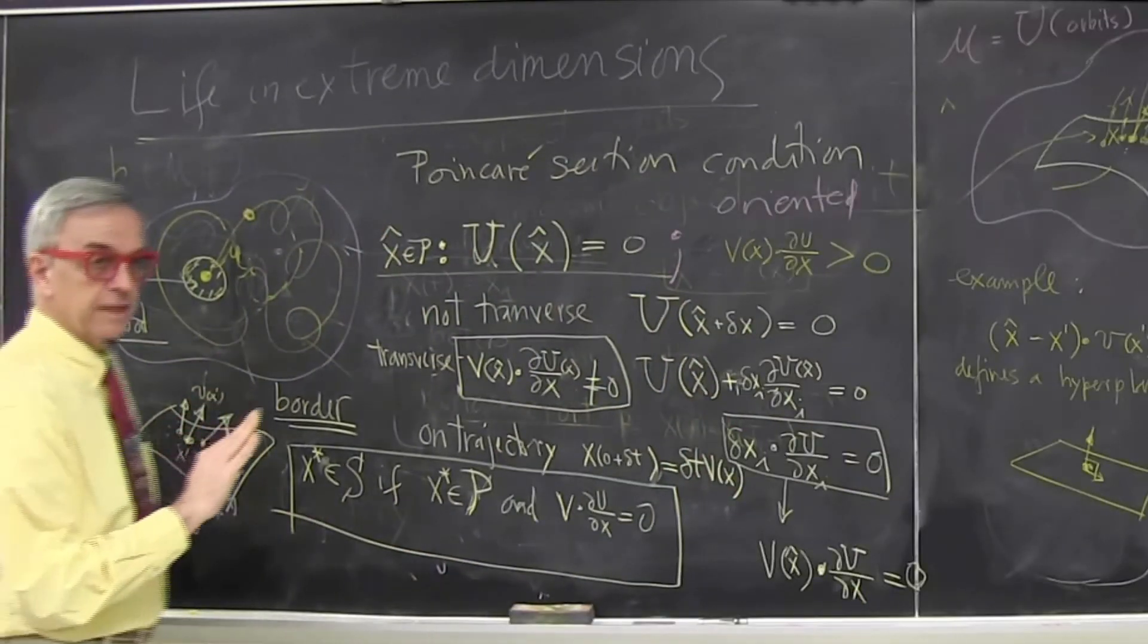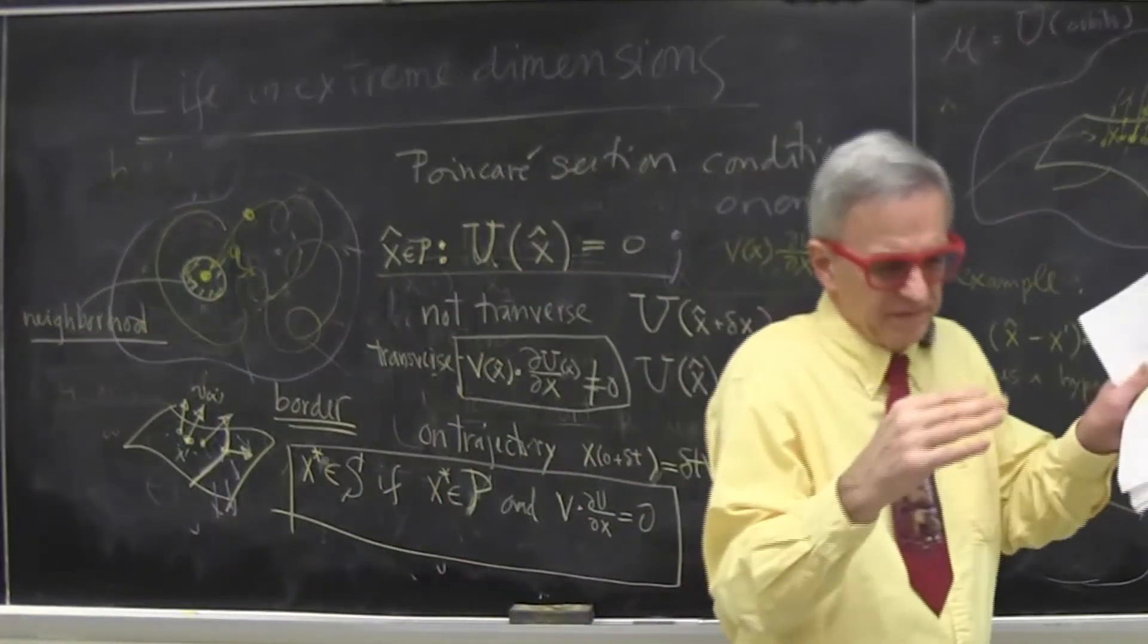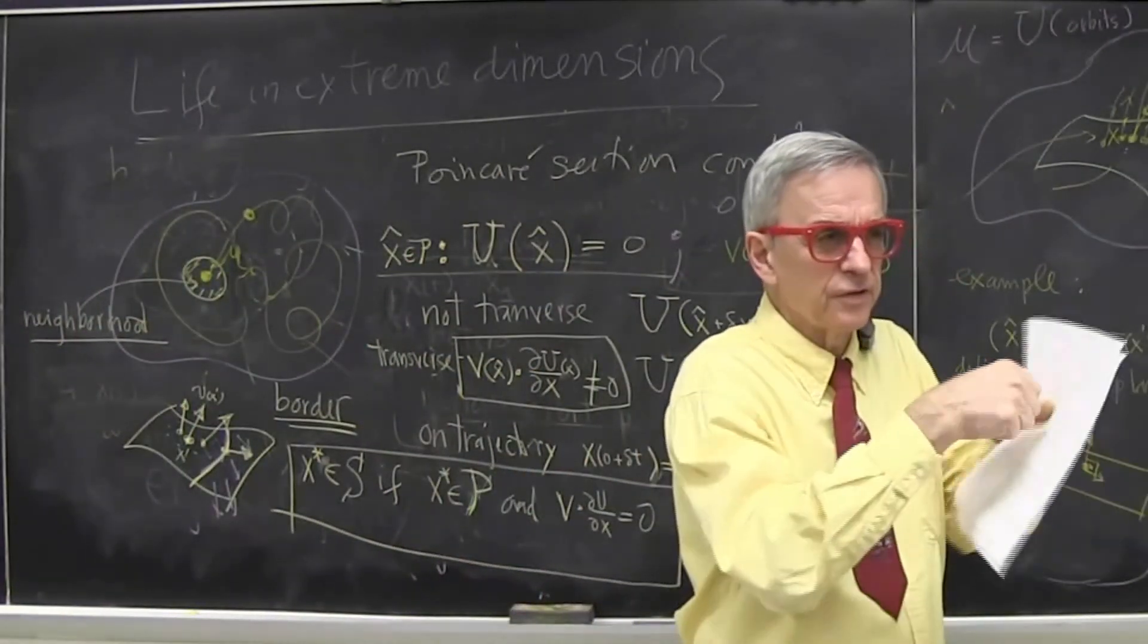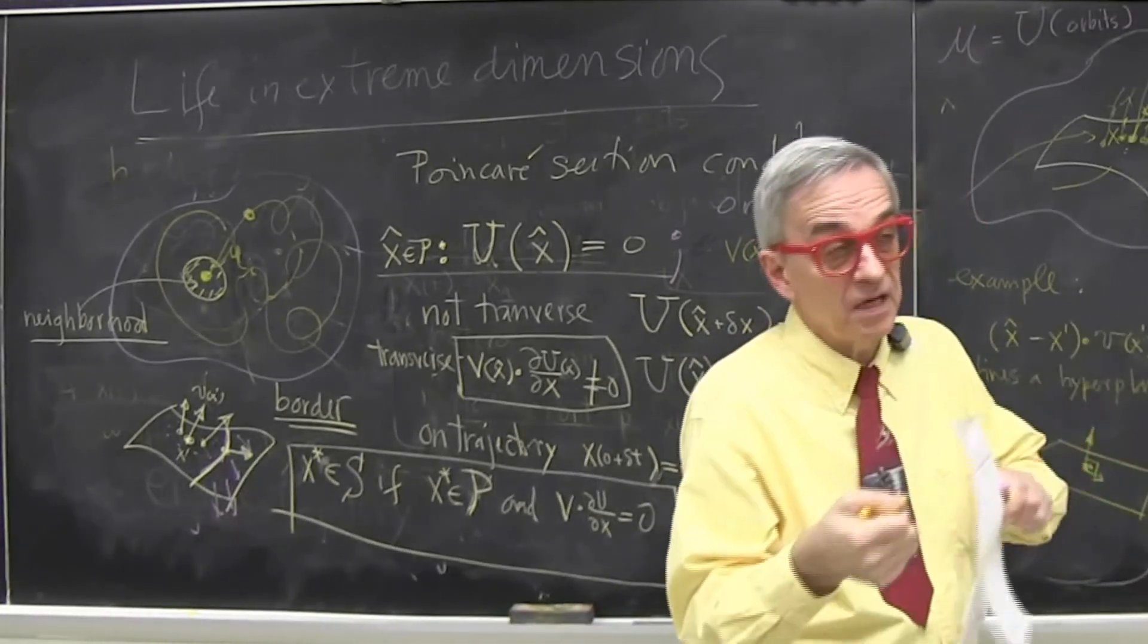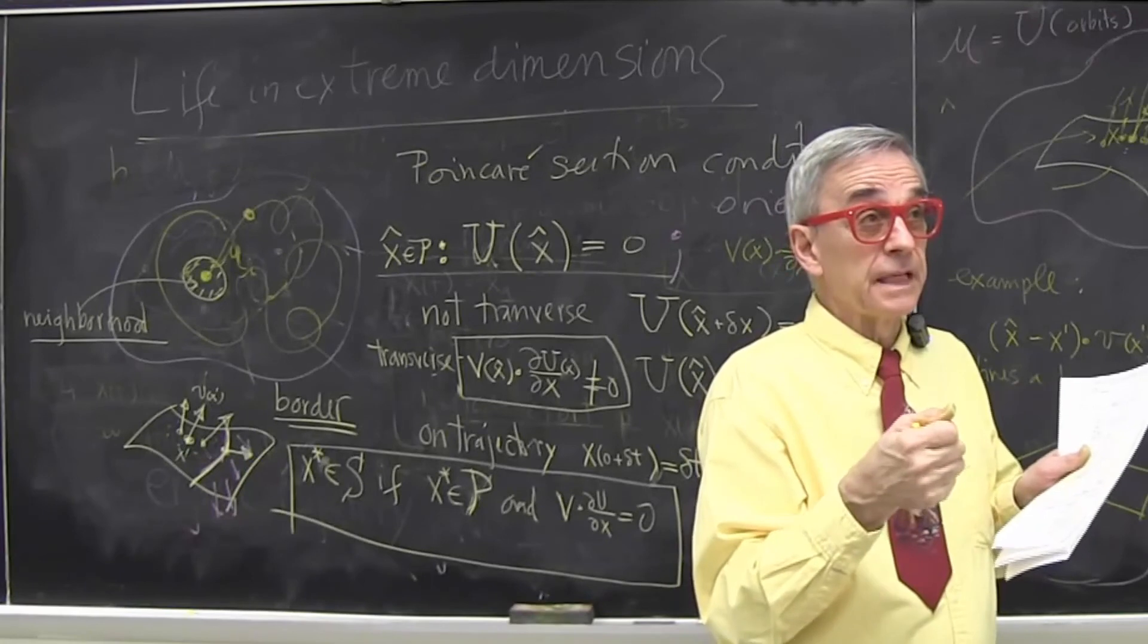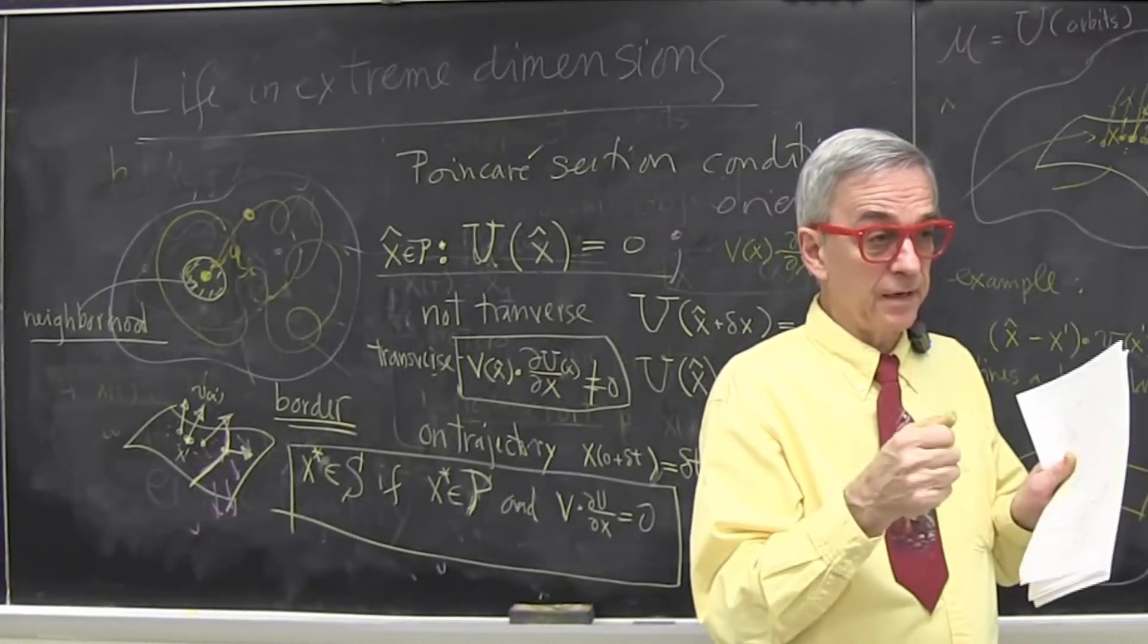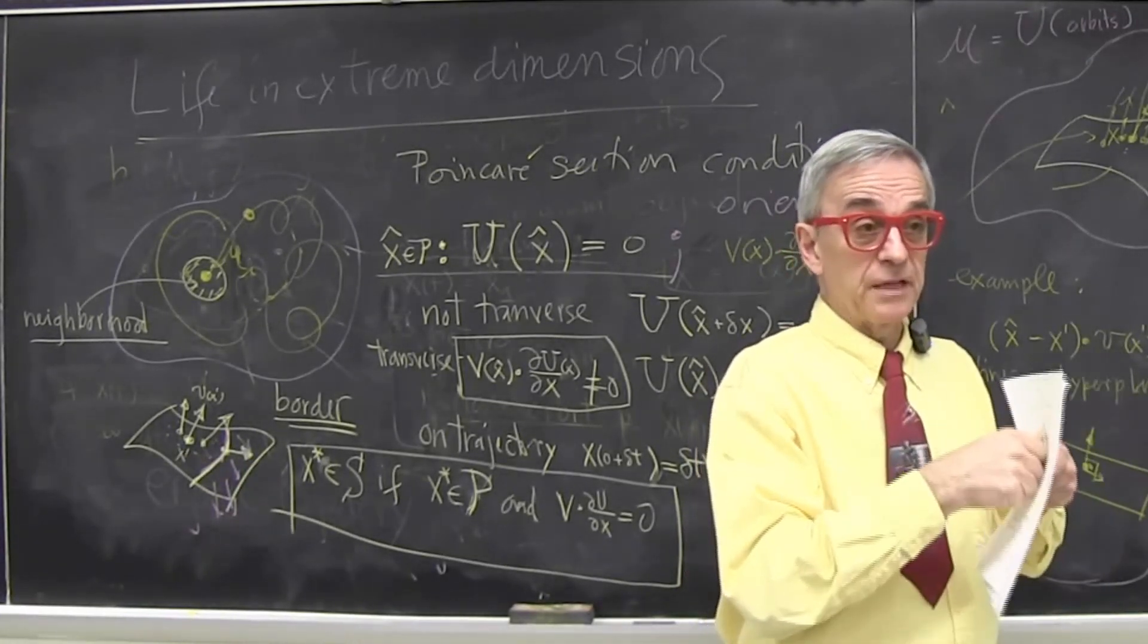And now you start getting some feeling that it's not easy to construct Poincaré section, because you have to have some geometrical intuition, what's a good hypersurface to pick, and where to pick it, and why to pick it there. But it's almost always going to be local. It will be very rare that you'll be able to write one function that cuts all the spaghetti.